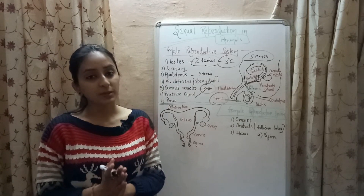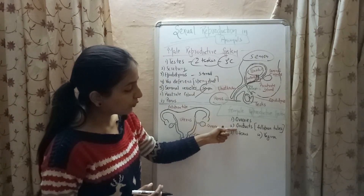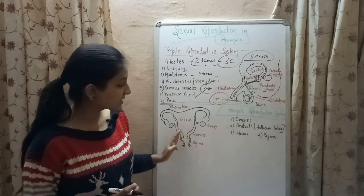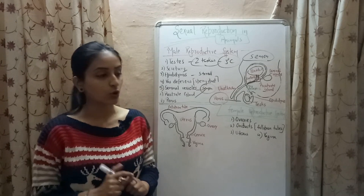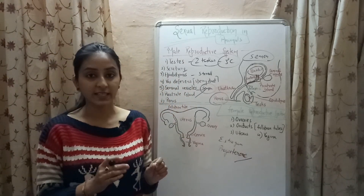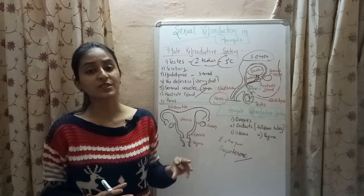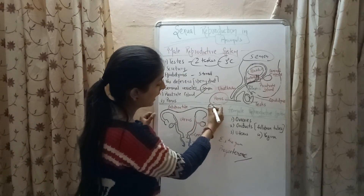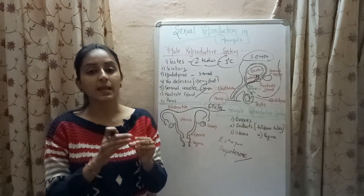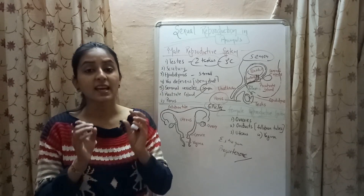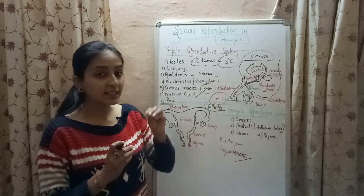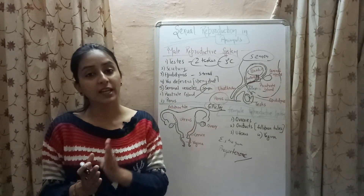Now let's come to the female reproductive system, which consists of four parts: ovaries, oviducts (also known as fallopian tubes), uterus and vagina. Ovaries are the primary reproductive structures in females, responsible for the production of female sex hormones called estrogen and progesterone, as well as the female gametes known as ovum or egg. Ovaries contain thousands of structures known as follicles that consist of immature eggs. Before puberty these eggs remain immature, but when girls reach puberty, the follicles and the eggs inside them mature and gain the ability to be fertilized.